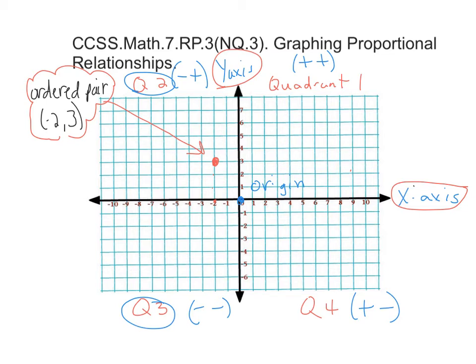The ordered pair is up here, negative 2, 3. And so this would be the x, and this would be the y. So you start at the origin right here in the middle. And it's negative 2, so you go back to 2. And then it's positive 3, so you go up 3. And this is the ordered pair point. It is negative 2, 3.